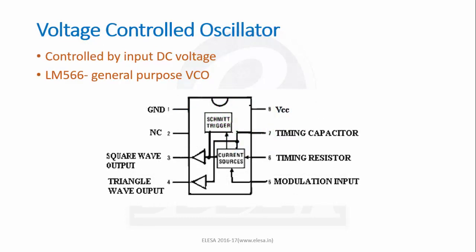Voltage controlled oscillator. It is an oscillator whose output can be varied over a range. It is controlled by input DC voltage. By varying DC voltage, output frequency of the signal produced is adjusted. LM566 is a general purpose VCO which generates square wave and triangular waveforms.